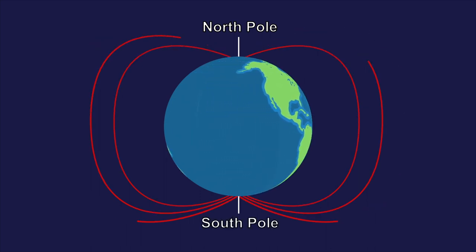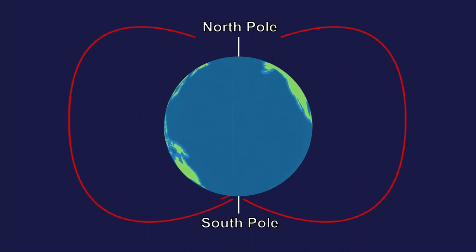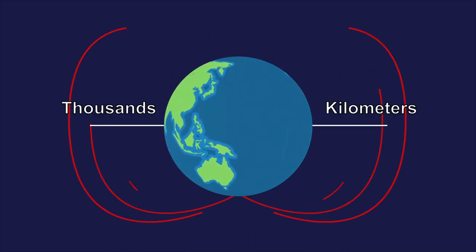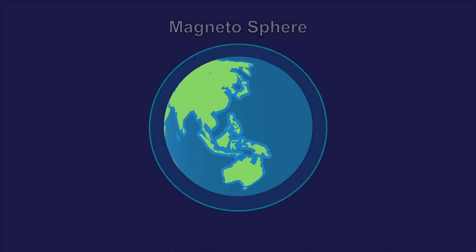This magnetic field from these poles extends tens of thousands of kilometers into space, creating a magnetosphere.